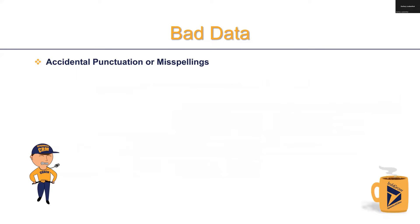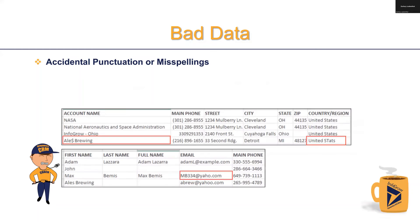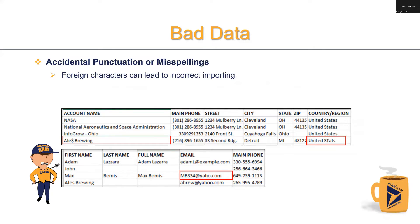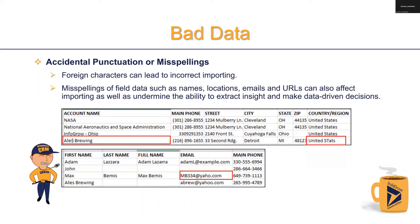Next, we have accidental punctuation or misspellings. Foreign characters can lead to troublesome data importing. Misspellings of field data such as names, locations, emails, and URLs can also affect importing as well as undermine the ability to extract insights and make any sort of data-driven decisions. You've got to be able to trust your data.